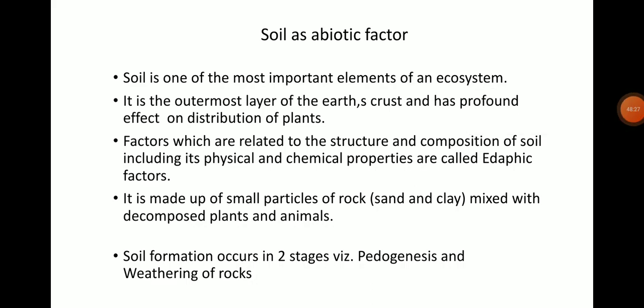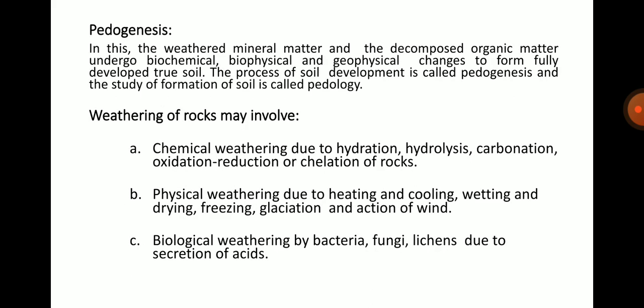Soil is one of the most important elements of an ecosystem. It is the outermost layer of Earth's crust and has a profound effect on the distribution of plants as well as animals. The factors related to the structure and composition of soil, including its physical and chemical properties, are called edaphic factors. Soil is made up of small particles of rock — sand and clay — mixed with decomposed plants and animals. Soil formation occurs in two stages: pedogenesis and weathering of rocks. In pedogenesis, weathered mineral matter and decomposed organic matter undergo biochemical, biophysical and geophysical changes to form fully developed true soil. The study of soil formation is called pedology.